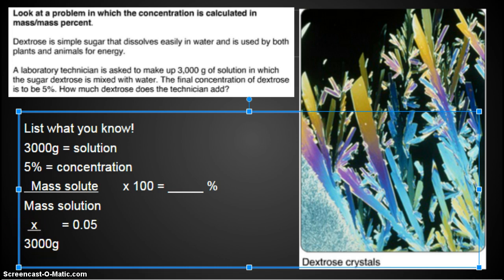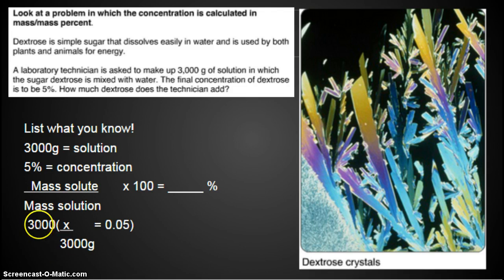We're going to divide this side by 100 to get rid of that 100. We're going to divide that by 100, and that gives us our decimal. So X over 3,000 grams equals 0.05. We're finding the mass of the solute. This is how much the solution is. That's our final percent that we wanted to make. How do we get the X by itself? We multiply both sides by 3,000.